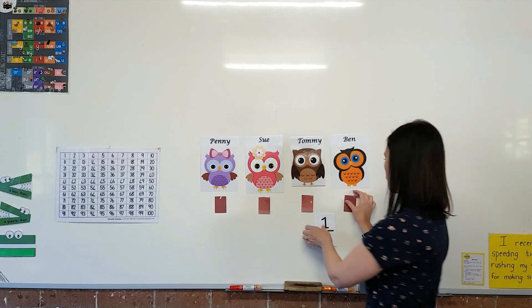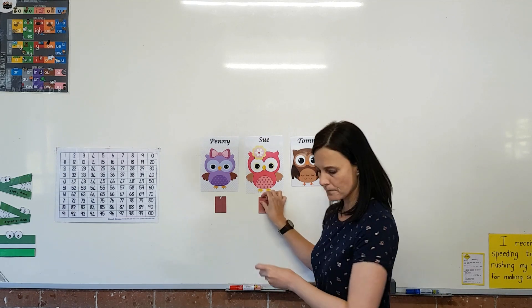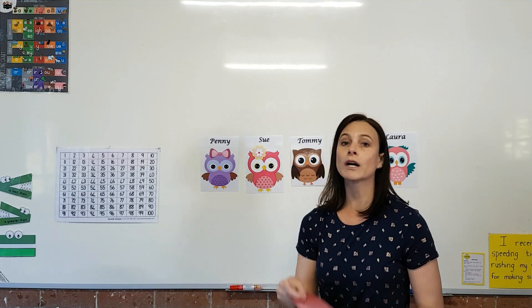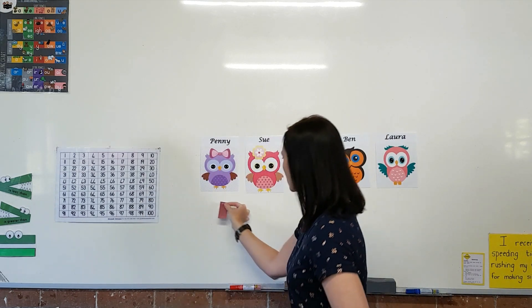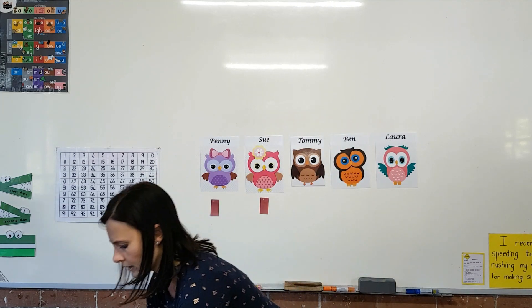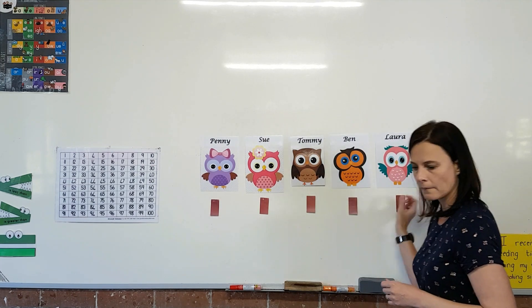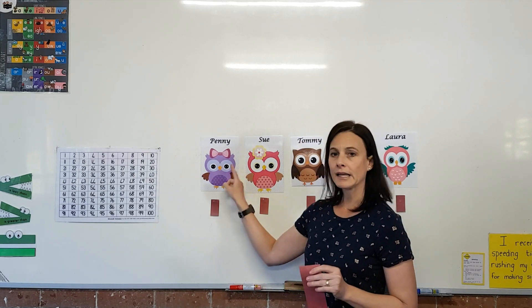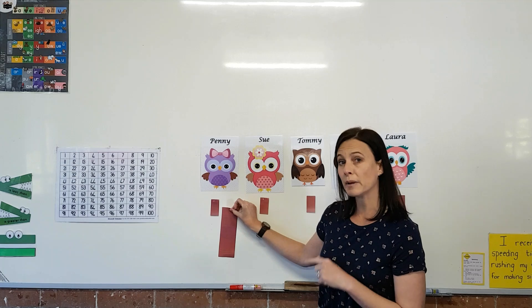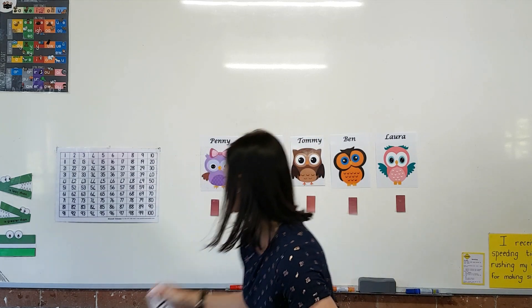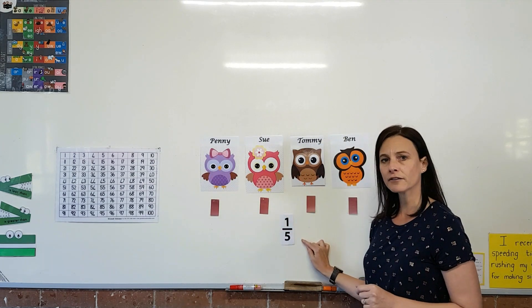I'm going to add one more friend, and this friend's name is Laura. So let's add Laura to the class — I have five friends and only one chocolate. I need to cut the chocolate into five equal pieces so each friend gets a piece. Can you see that the pieces are becoming smaller? Because in the beginning Penny had the entire chocolate to herself, which was quite big, but now she's only getting a small piece of the entire chocolate bar. The fraction for this one is called a fifth or one fifth.